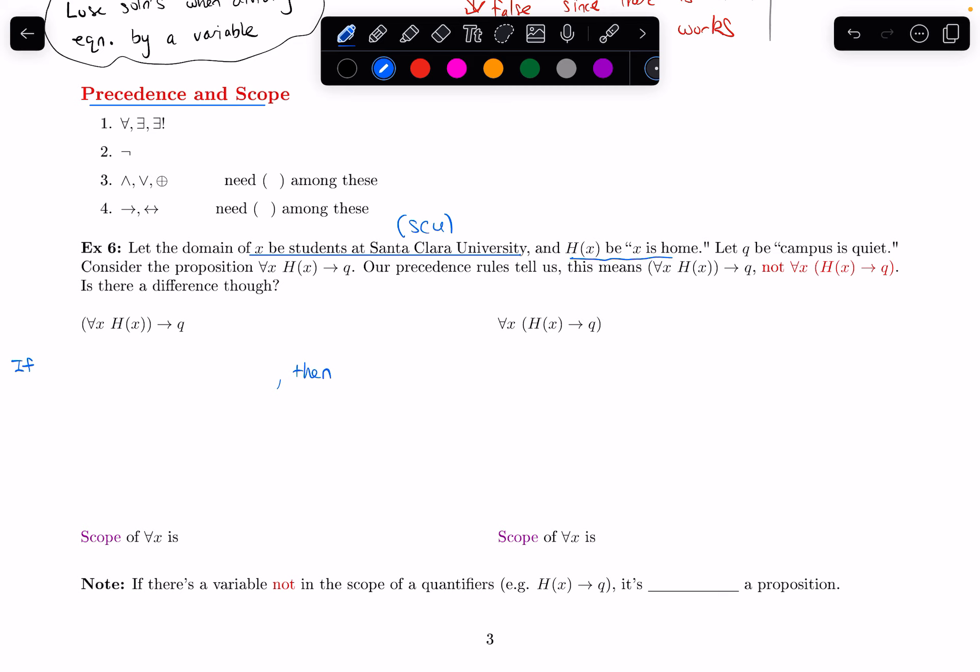So for all students, for all X, X is home. That's just another way of saying if all SCU students are home, then Q, which says then campus is quiet.